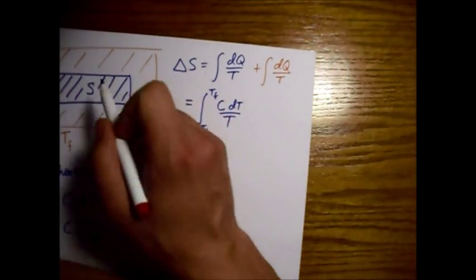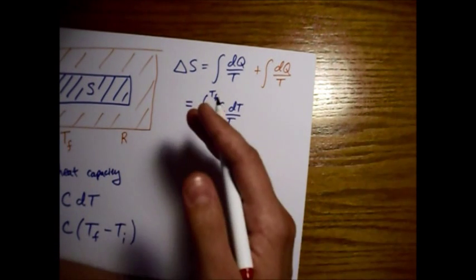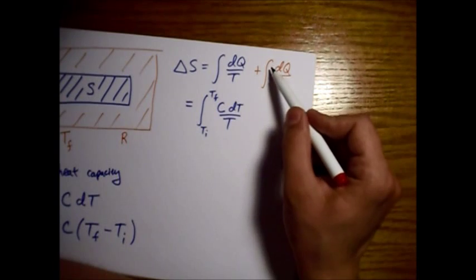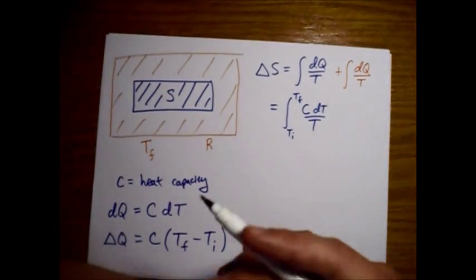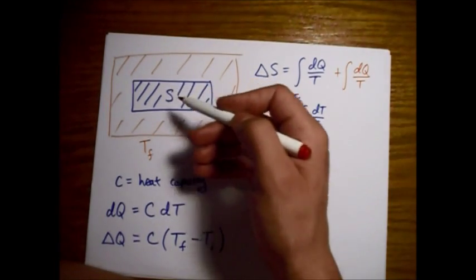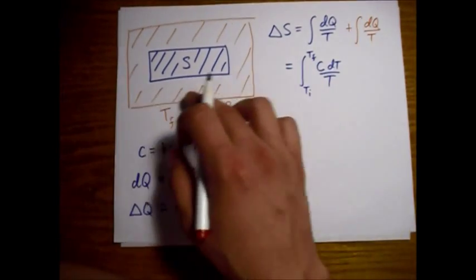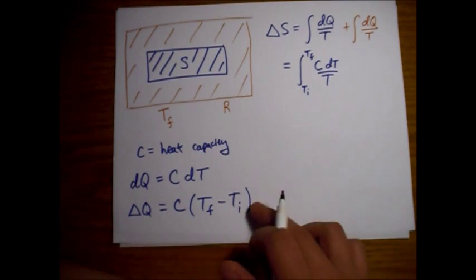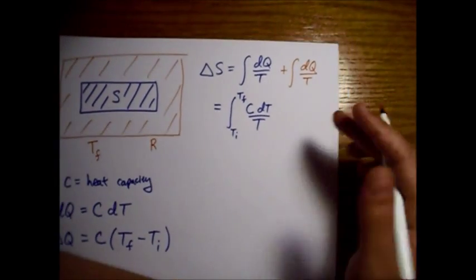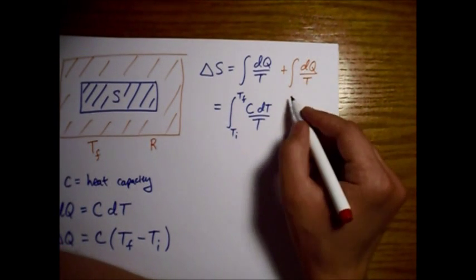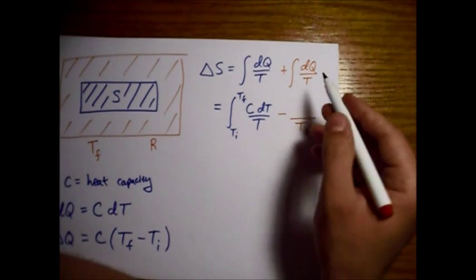And then we need to look at how much energy is flowing into this reservoir. Well, energy is just flowing into the system from the reservoir, but we do know how much that is. And so the energy flowing into this reservoir is actually minus the energy flowing into the system. Essentially, it's just energy flowing out of the reservoir. So there's just a minus sign here. The temperature over the whole process is Tf.